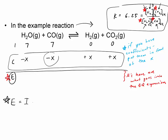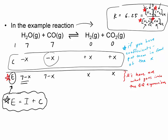So at equilibrium: H₂O is seven minus x, CO is seven minus x, H₂ is x, and CO₂ is x. Now let's set up and solve the equilibrium expression: 6.25 equals x² over (7 − x)². We'll see there's a nice way to solve this since both sides are perfect squares — we could just take the square root of both sides.